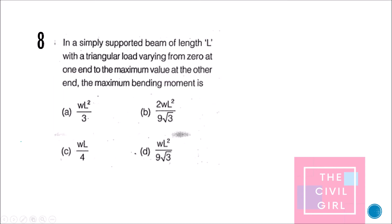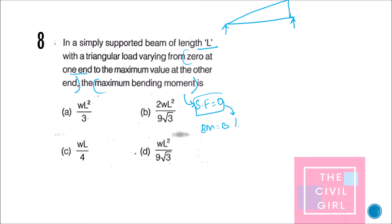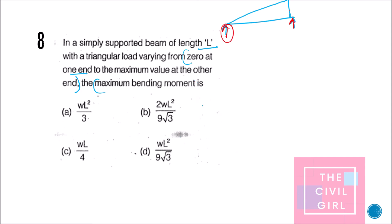Next question: a simply supported beam of length l carries a triangular load varying from zero at one end to a maximum value at the other end — what is the maximum bending moment? In the previous video we found that the shear force is zero at x = l/√3, and the maximum bending moment occurs where shear force is zero. Ra = total load / 3 = wl/6.